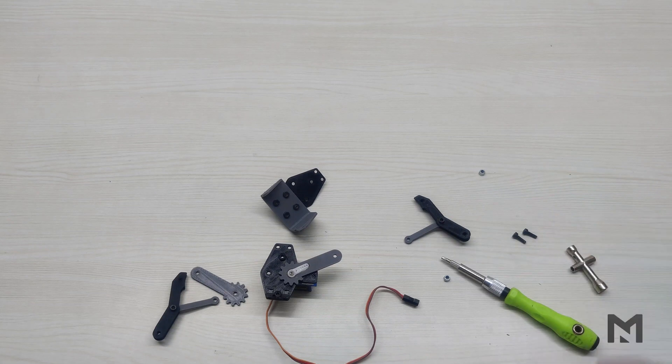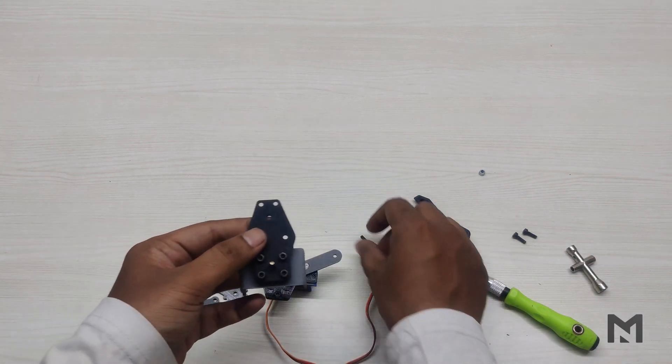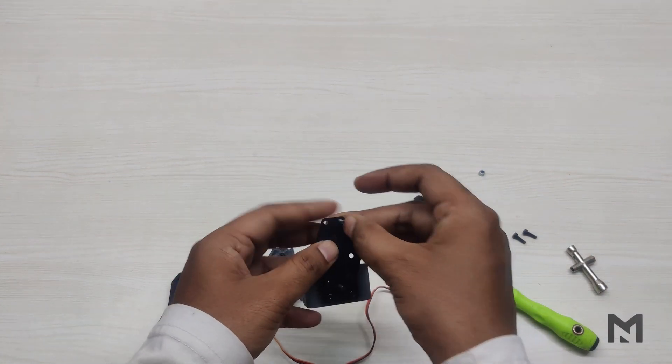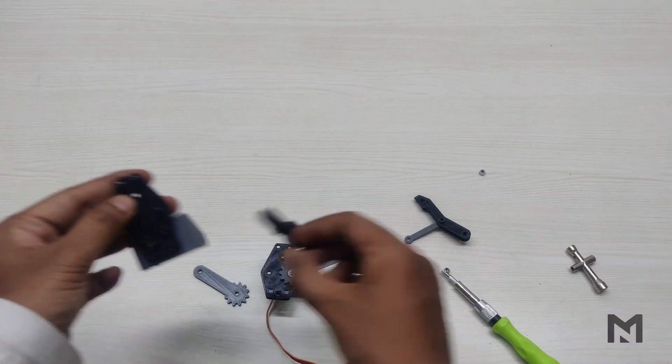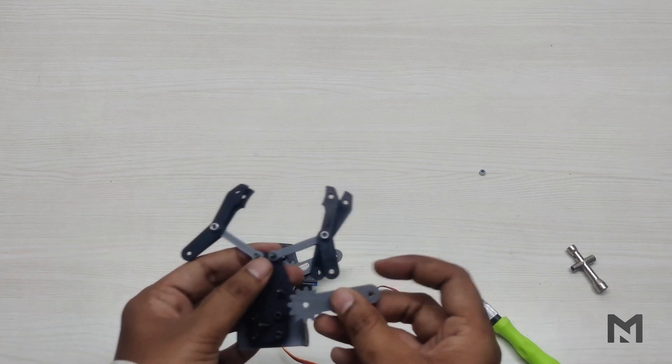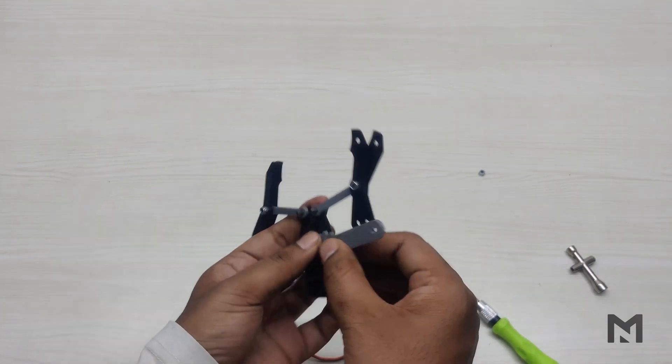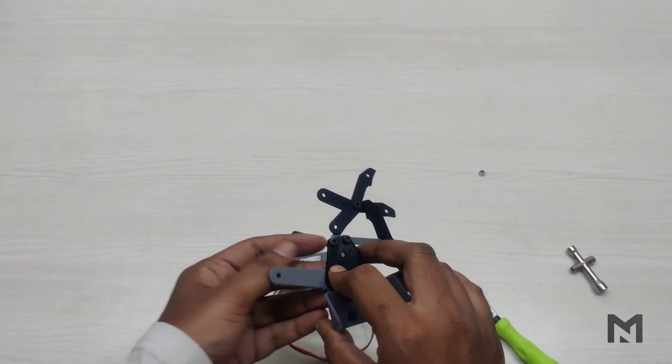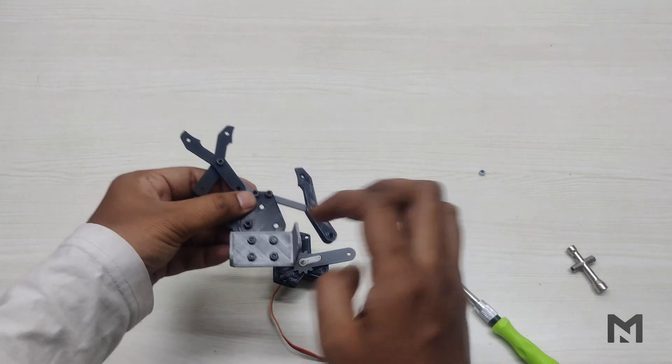Now comes the tricky part, that is assembling all the parts together. First insert the screws into the holes provided in the middle plate as shown. Then attach both the claw links with the screws. Then attach the other arm to the middle plate using a 10mm screw. Now place both the parts on top of each other and assemble them.